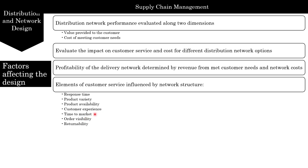Time to market is the time it takes to bring a new product to market. Order visibility is the ability of customers to track their orders from placement to delivery. Returnability is the ease with which a customer can return unsatisfactory merchandise and the ability of the network to handle such returns.